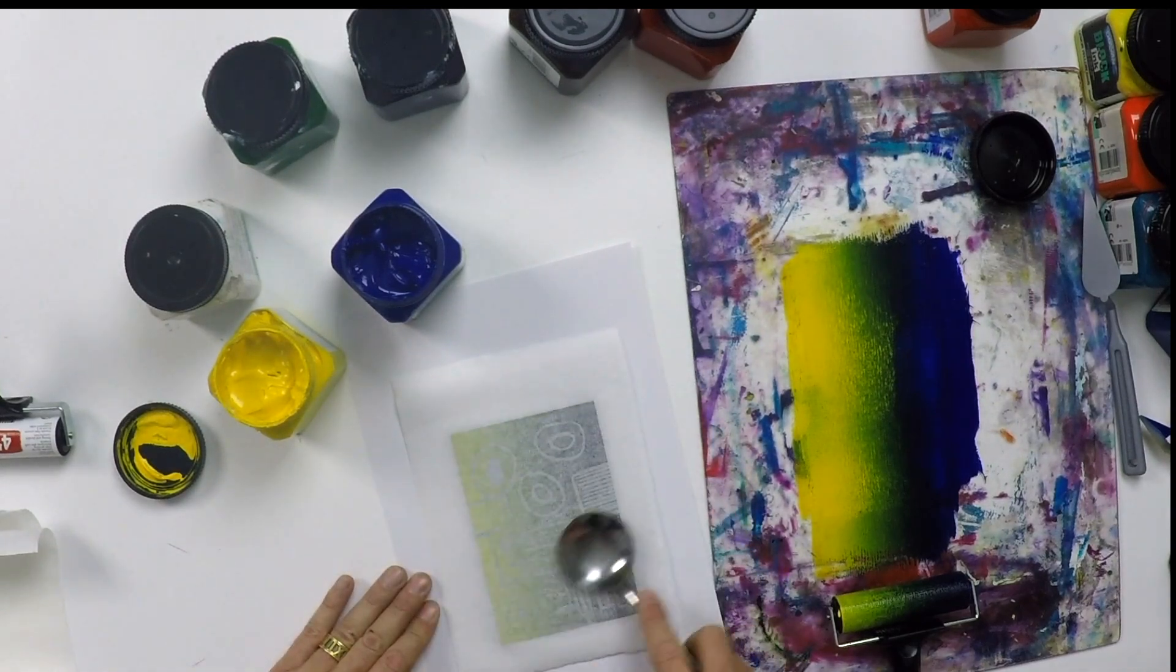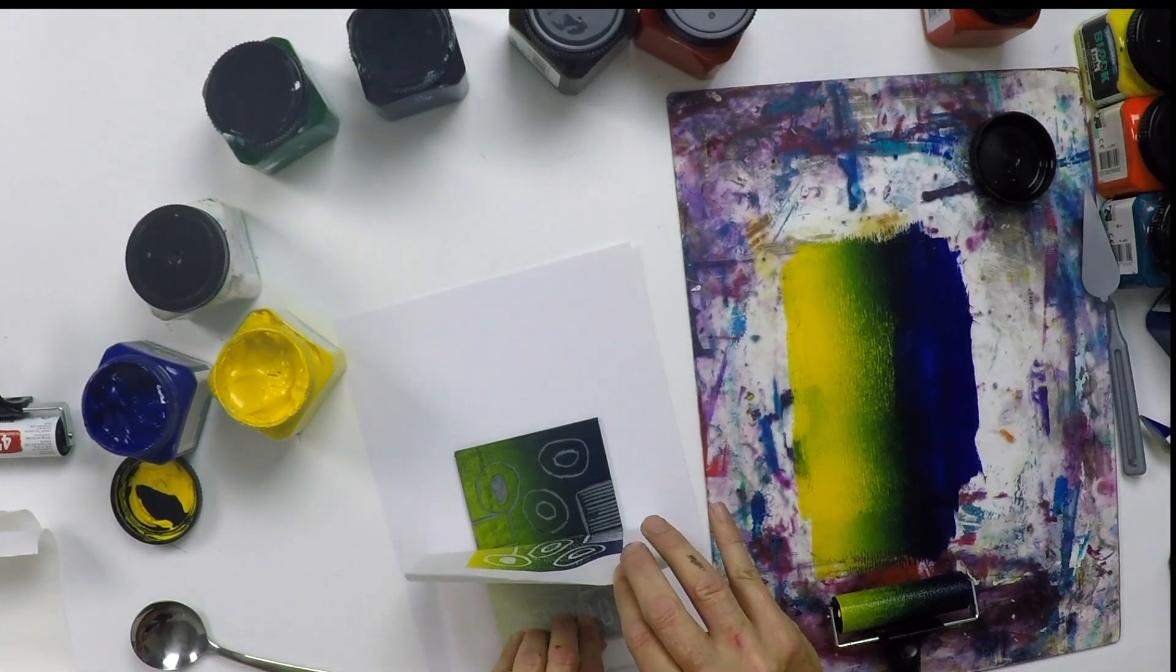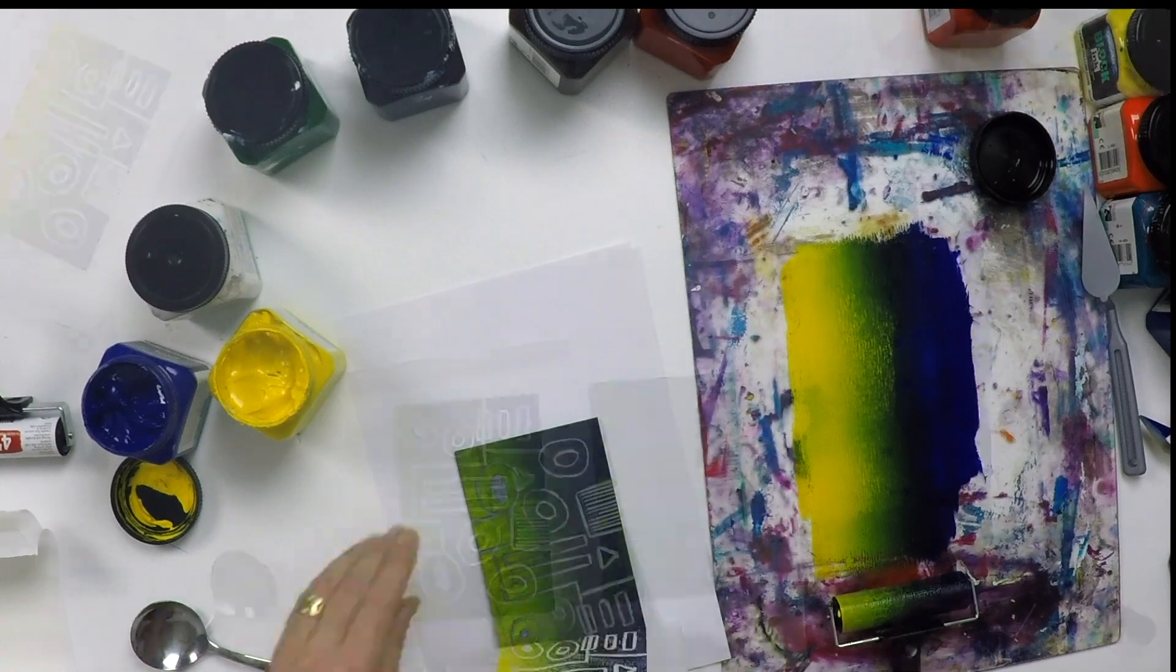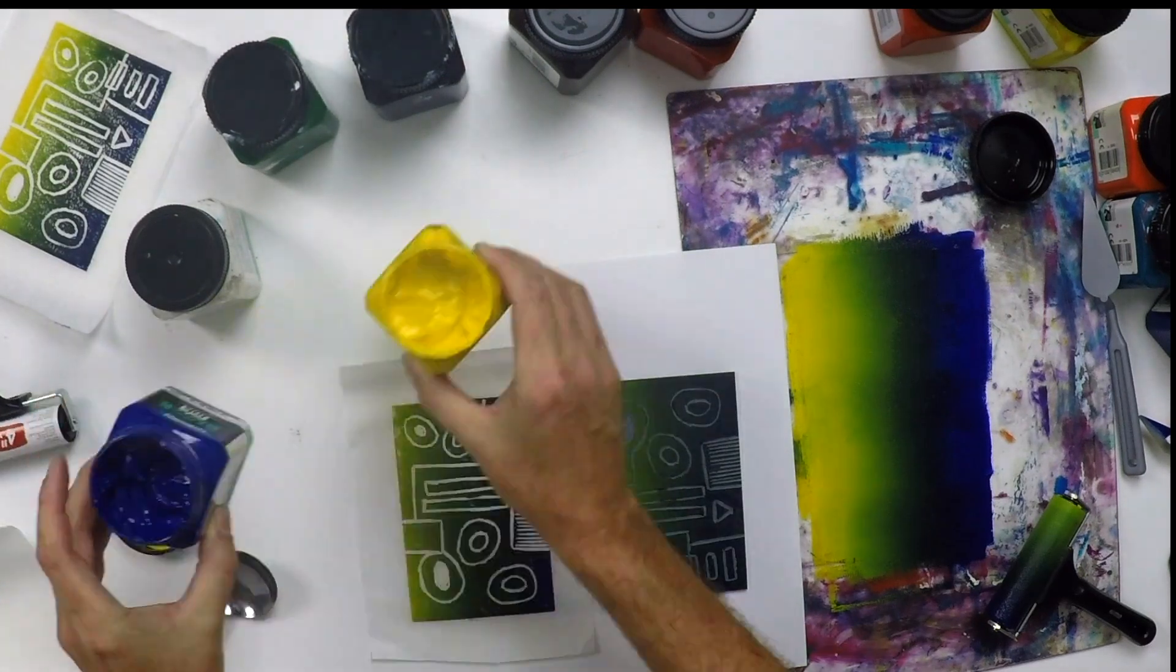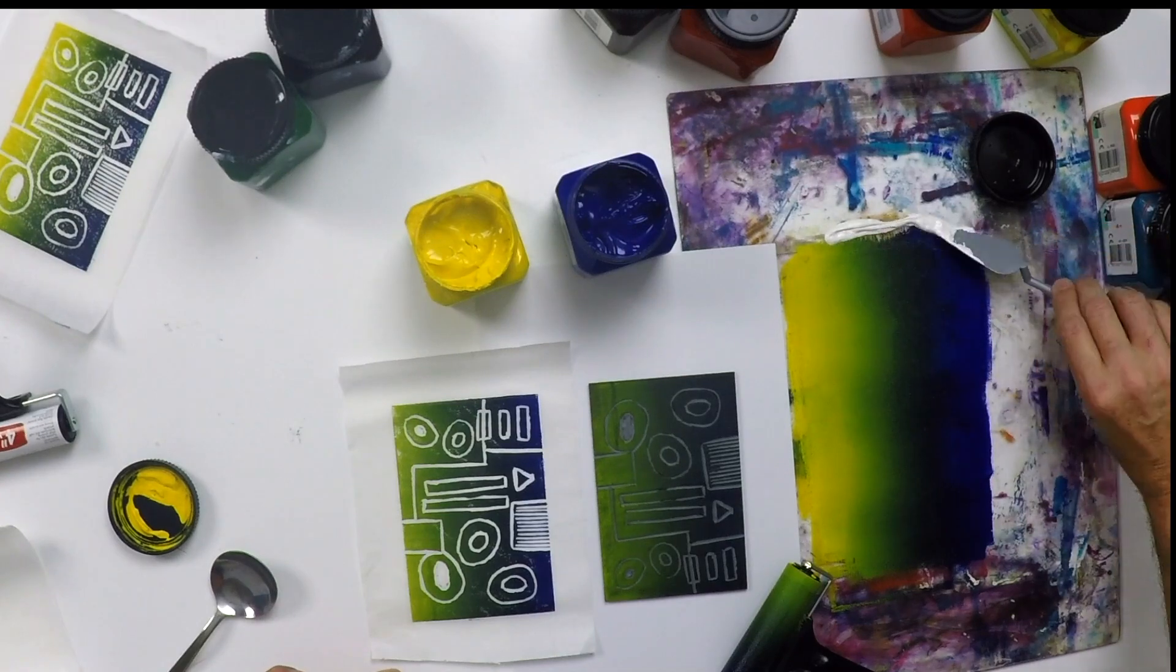So now I'm going to add some white ink. When we roll this, it's going to get darker and darker the more we incorporate that white.